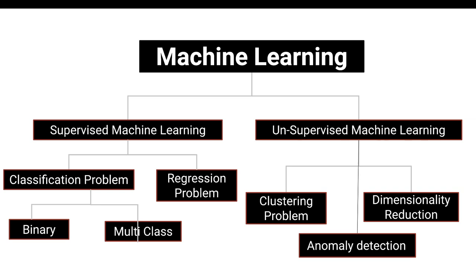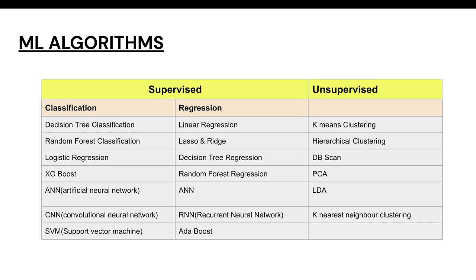We have discussed how supervised machine learning can solve classification and regression problems. In this video we are going to talk about linear regression, which is an algorithm that helps you solve a regression problem. As you can see in this chart, linear regression falls under supervised machine learning. If you want to understand supervised, unsupervised, classification, binary, multiclass, and regression problems in detail, I recommend watching my first video.